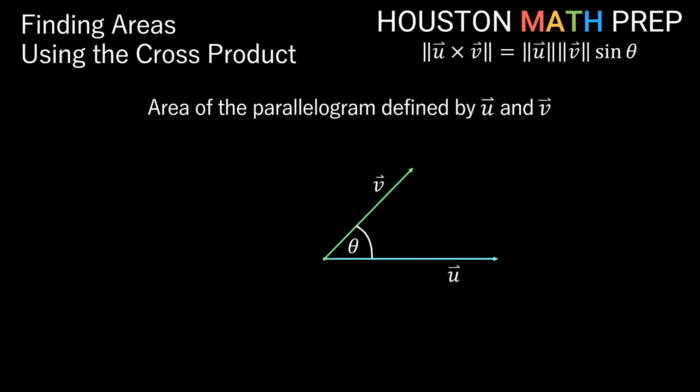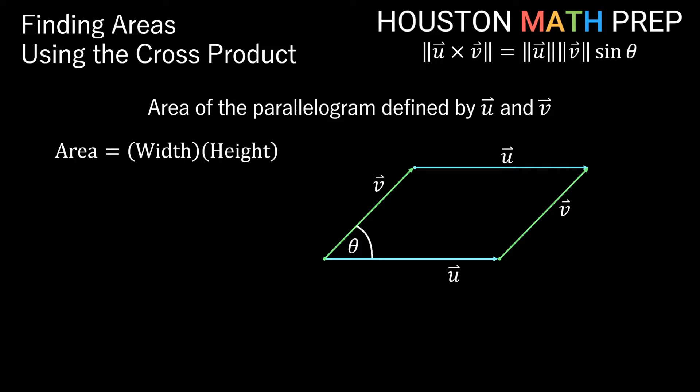We'll set that formula up in the top right corner here for now and look at finding the area of a parallelogram defined by two vectors in space — in this case u and v. When we say defined by two vectors, we think of two adjacent sides of the parallelogram being those two vectors, with the other two sides being copies of those vectors as well. We might remember that the formula for the area of a parallelogram, same as a rectangle really, is simply the width times the height. The width is just however long vector u is, so our area is the magnitude of u times whatever the height is.